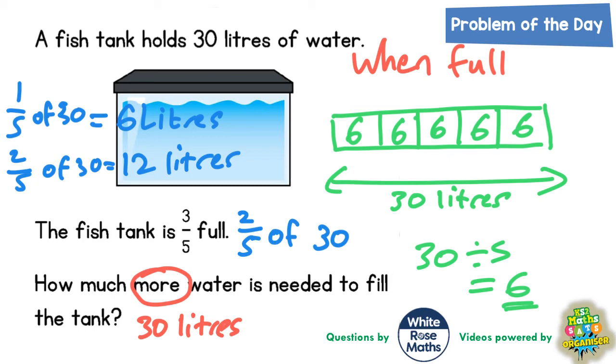So each fifth is worth six liters. So when it's three fifths full, that means there is three lots of six liters of water already in the tank. Well, three lots of six is 18, so there must be 18 liters already in the tank. Now if there's 18 liters already in the tank, that means you need an extra 12 liters.